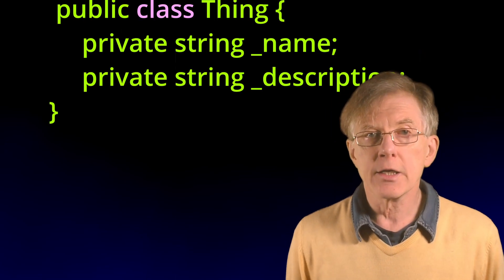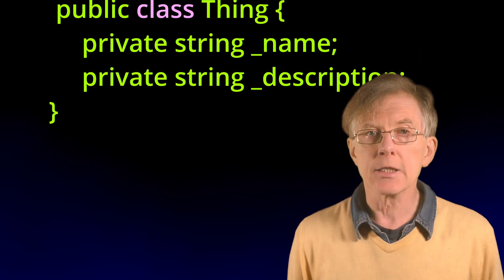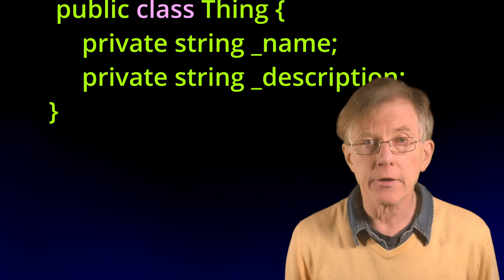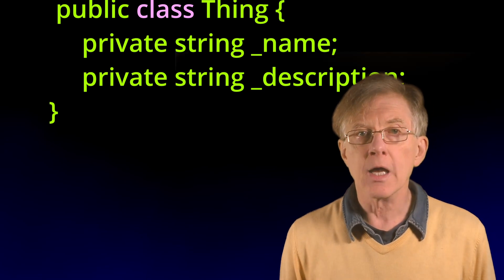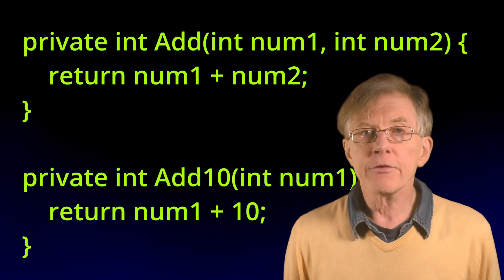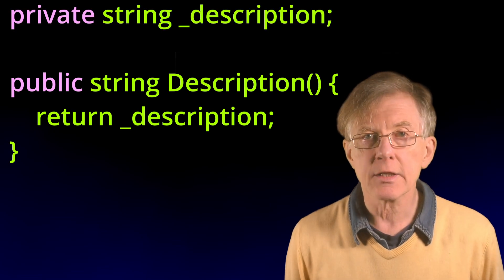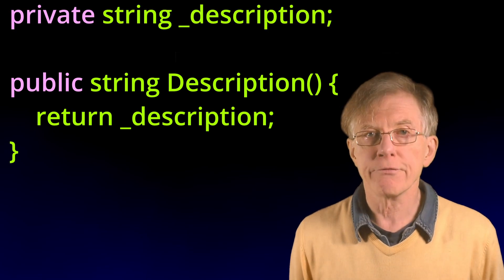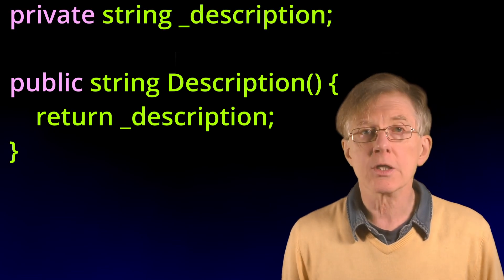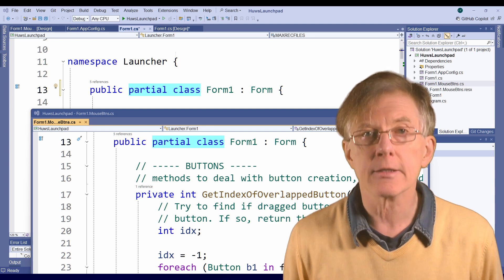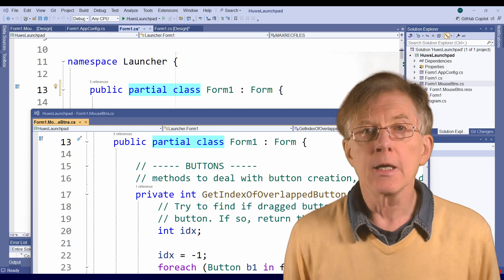Objects are created from class definitions. A class may contain variables or fields and functions or methods. Often methods are marked as public and fields as private to ensure that field values can only be changed by calling the methods of an object. If you want to split one class across multiple files, you can declare it to be a partial class.